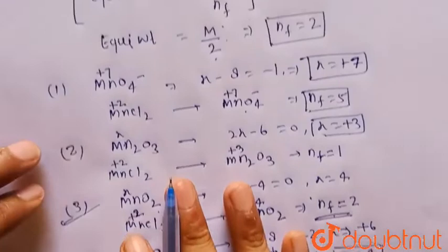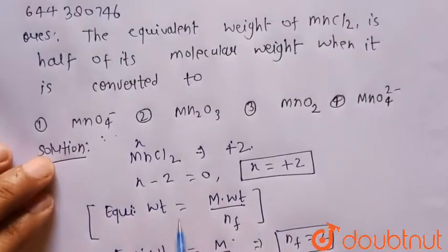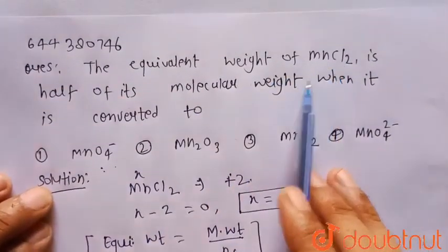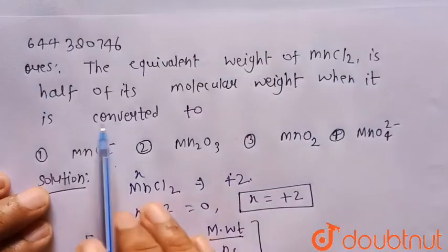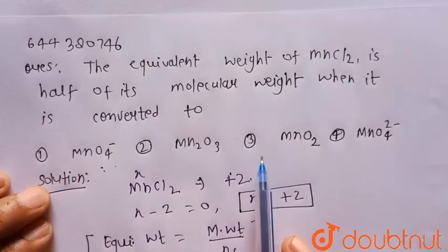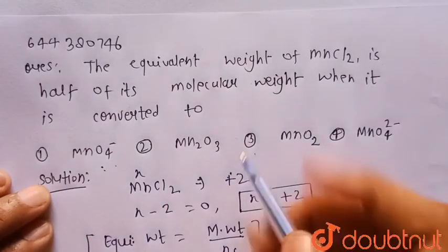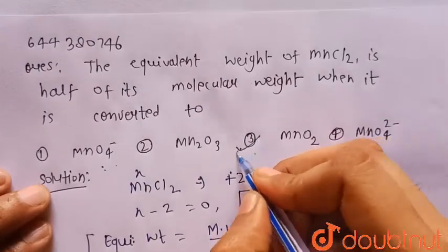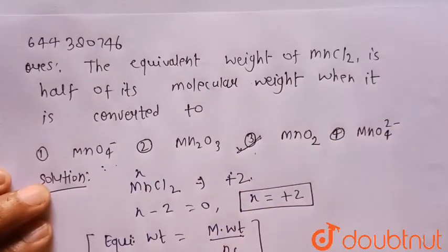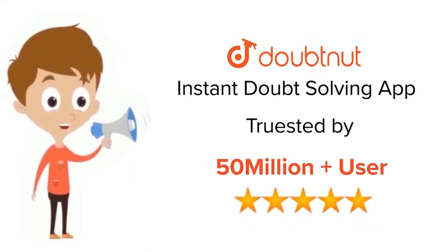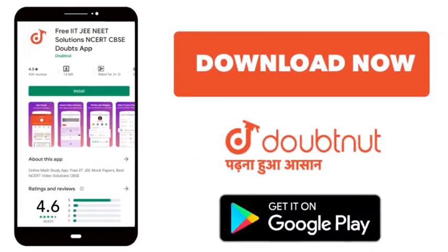Hence, the equivalent weight of MnCl2 is half of its molecular weight when it is converted to MnO2. Option 3, MnO2, is the correct choice. Thank you. For class 6 to 12th, IIT-JEE and NEET level, trusted by more than 5 crore students — download Doubtnut today.